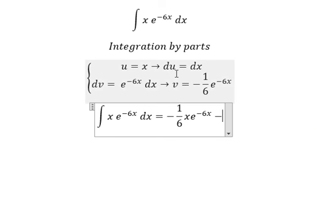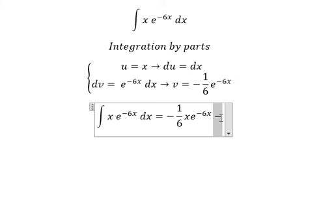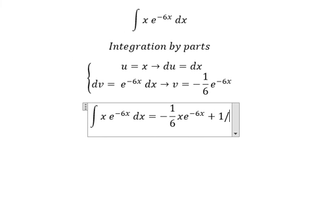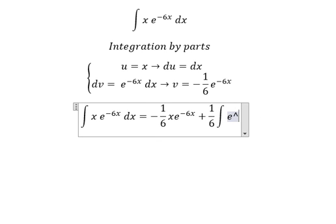Minus we have du multiplied by v, but we have negative 1 over 6 and we have another negative in here, so you got positive 1 over 6, and we have the integration of e to the power of negative 6x dx.